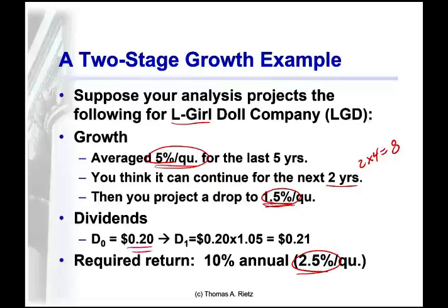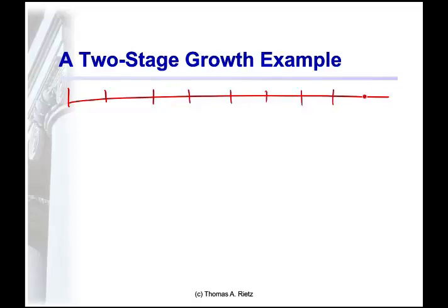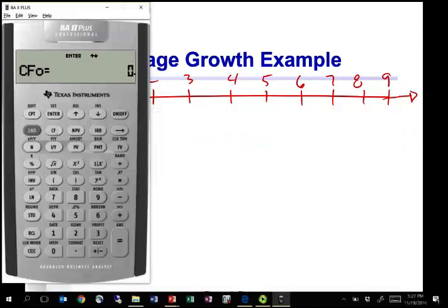First, take last period's dividend — which we should know at this point — multiply by the anticipated growth to get next period's dividend. We'll put the whole thing on a timeline. I'm going to set cash flow 0 at 0 so that when I get the net present value, I'll just have the present value of the future cash flows. Cash flow 1 is already known to be 21 cents.